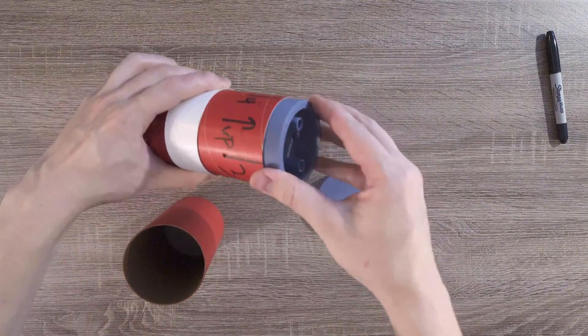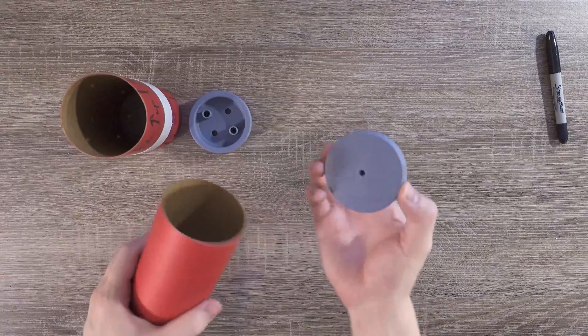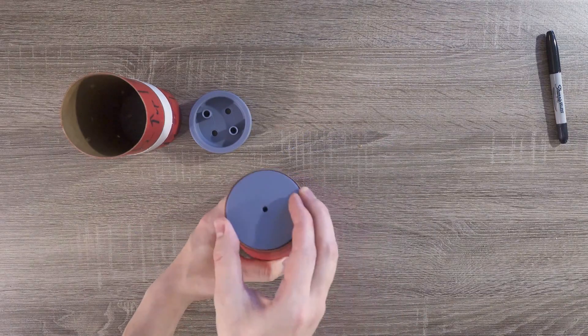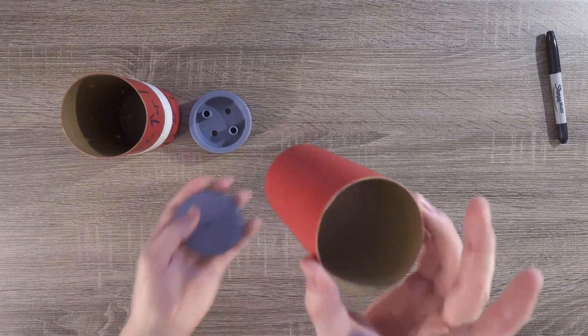As you might have guessed, the coupler bulkhead goes in the body tube coupler, and the piston bulkhead goes in a separate body tube coupler, which will turn into a piston that will eject the parachutes.